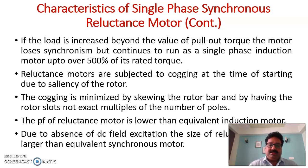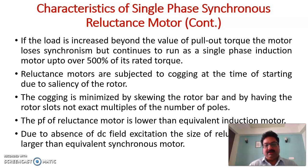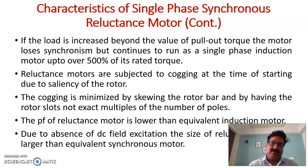This motor is subjected to cogging at the time of starting because of the saliency of the rotor. This cogging can be minimized by skewing, as is done in squirrel cage machines. The power factor of this reluctance motor is lower compared to an induction motor. And because of the absence of DC field excitation, the size of this single-phase synchronous reluctance motor is larger than an equivalent synchronous motor — this is a drawback.